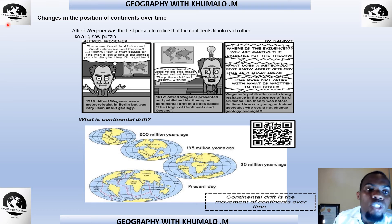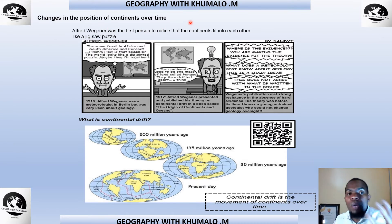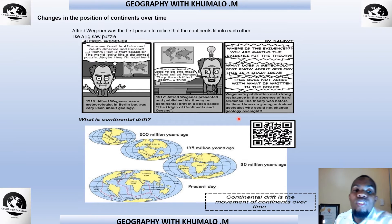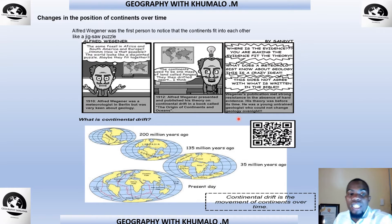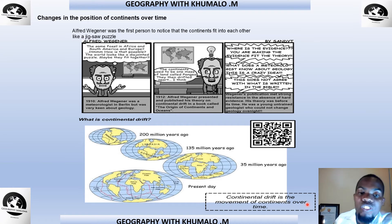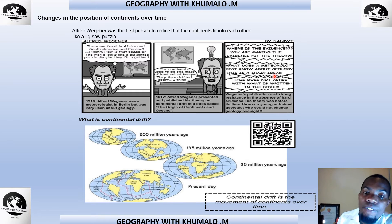Another topic you learned is the change in the position of continents over time — we call this continental drifting. Alfred Wegener was the first person to notice that the continents fit into each other like jigsaw puzzle pieces. Continental drift is the movement of continents over time as they move apart from each other, and this theory was discovered by Alfred Wegener.